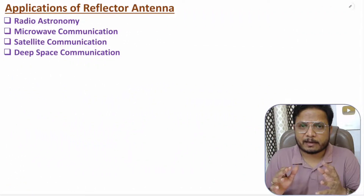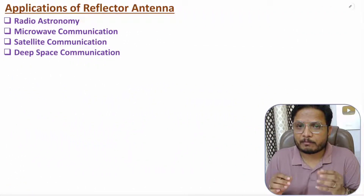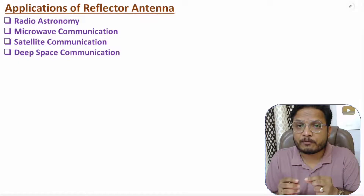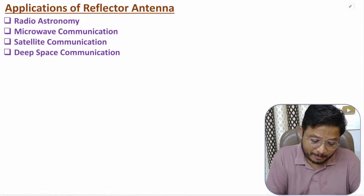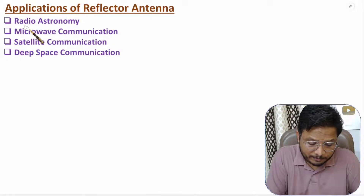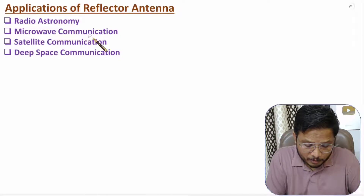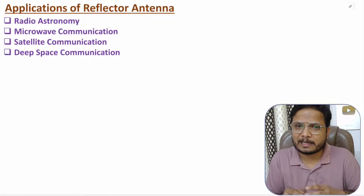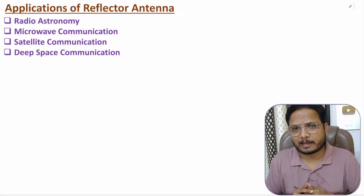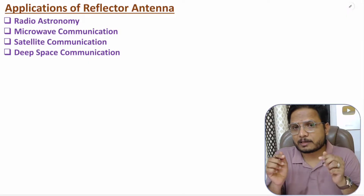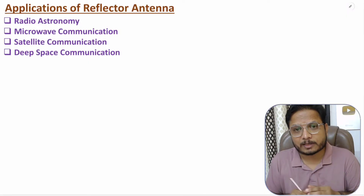Reflector antenna has very high directivity. Because of its high directional properties, we use it for long distance communication. Applications include radio astronomy, microwave communication, satellite communication, and deep space communication. I hope you understood this session — if you have any questions, note them in the comment section. Thank you for watching.